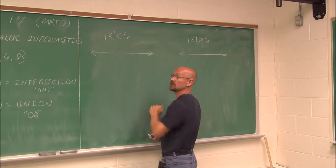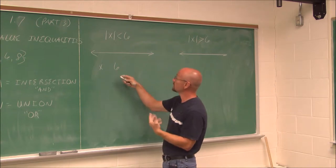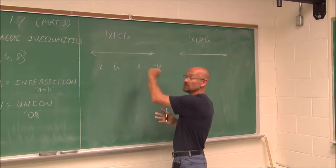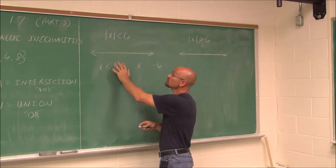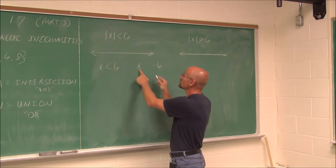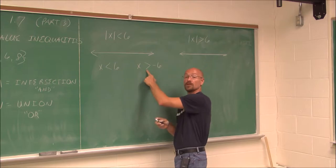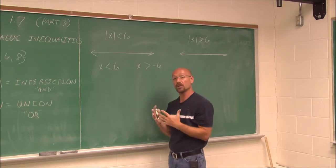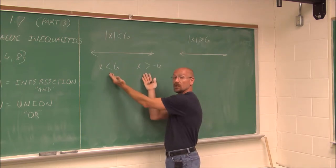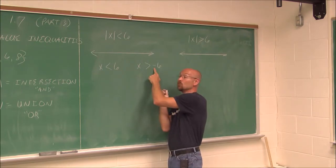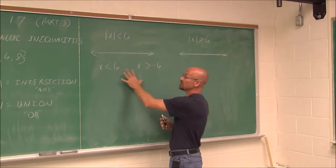Here I have the absolute value of x is less than 6. If we write two equations, x could be 6 or x could be negative 6 if this was an equation. But since it's an inequality, we have to realize that x could be less than 6, as the statement says, or x could be greater than negative 6. Because I changed the sign of the number, I have to remember to change the sign of the inequality as well. So when dealing with absolute value inequalities, we write two inequalities, one of which we have to change the sign. And now we can see the statements are already simplified.